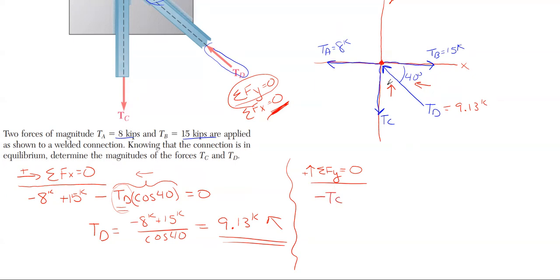So it's going to be plus, and it's going to be my newly found value of 9.13 kips. And this time, because the angle is off of the x, not the y, and I'm looking for the y component, it will be sine of 40 degrees. And that's all I have in the y direction. TC is the only unknown there, so I can just rearrange and solve, which is a pretty simple algebra equation. So 9.13 sine of 40 comes out to be 5.87 kips in that downward direction there.